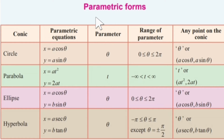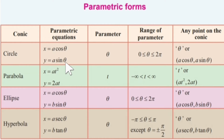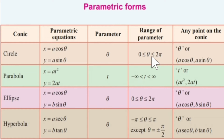Now let us see the parametric forms of different conics. First let us see about the circle. The parametric equation of the circle is x equal to a cos theta and y equal to a sin theta. Here we have considered theta as the parameter.